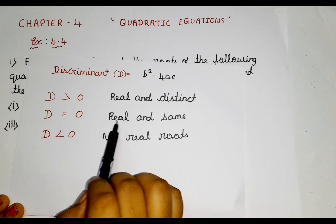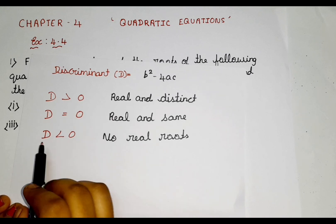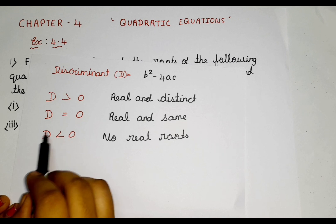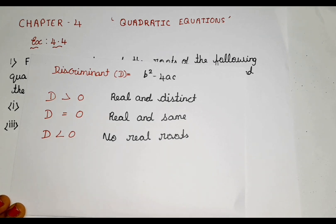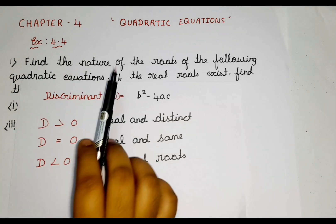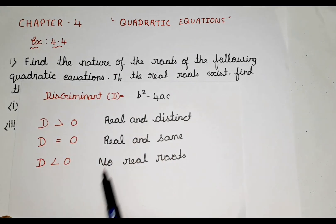If they are same, then we can write real and same. If it is smaller, if the discriminant is smaller, then it is no real roots. Here we are supposed to find the nature of the roots. These are the natures of the roots.